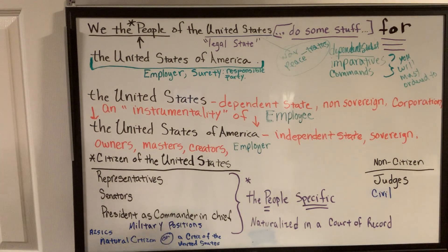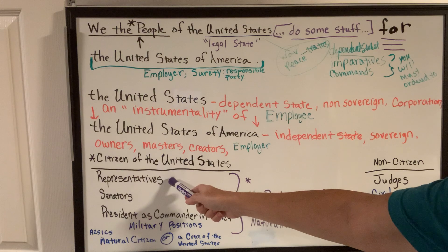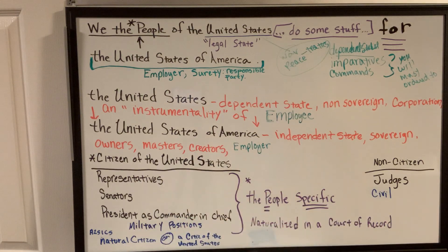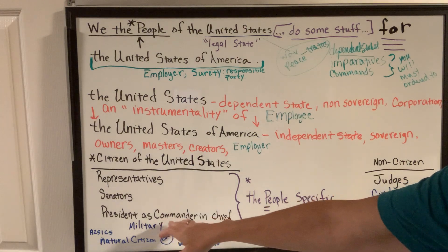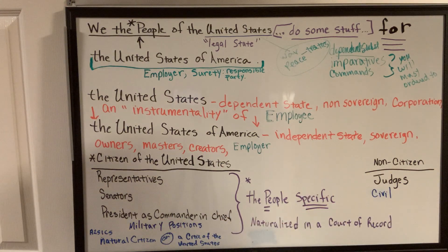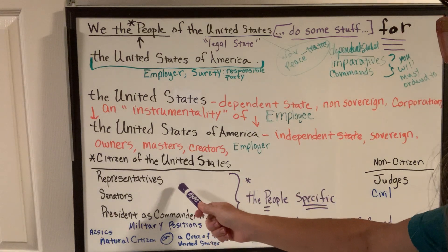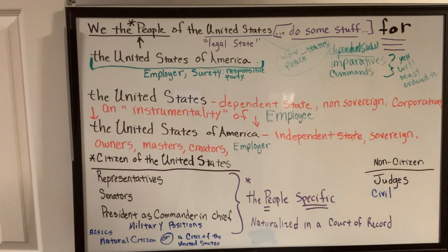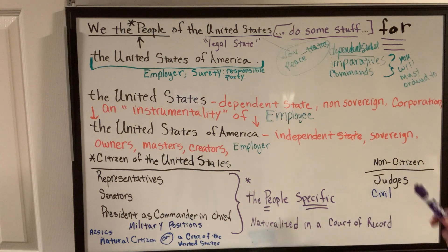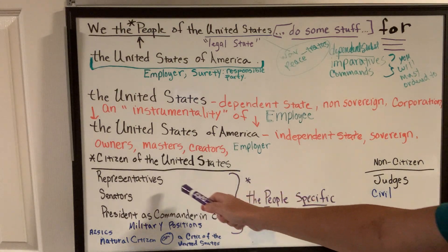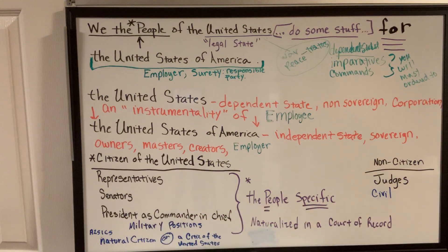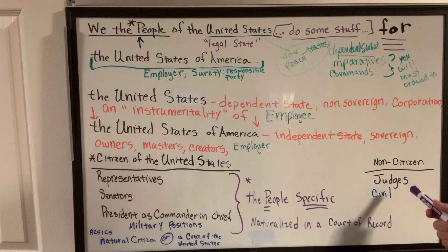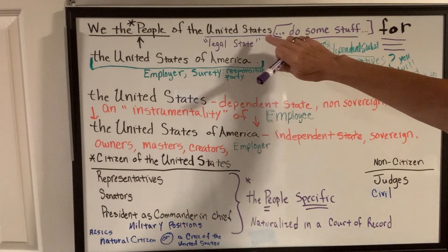So who's required to be a citizen of the United States? In the Constitution it says representatives, senators, and the president — in both his capacities, executive and as commander-in-chief. Citizens of the United States are members. Judges are not required to be citizens of the United States. So if there is a citizen of the United States and a non-citizen of the United States, which one are you? Are you a representative, senator, or president? Or are you more like a non-citizen of the United States?